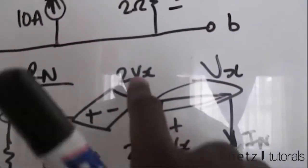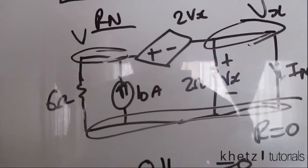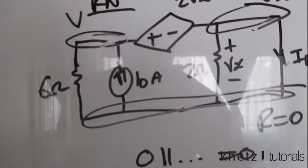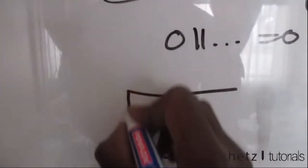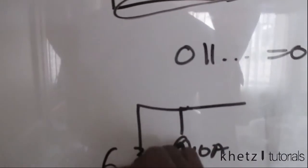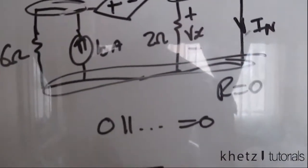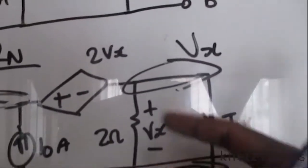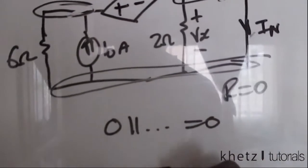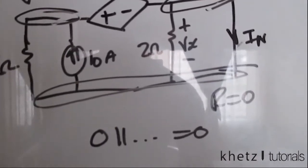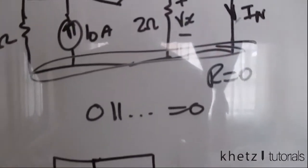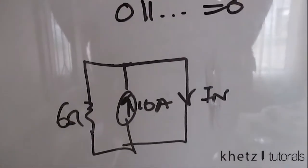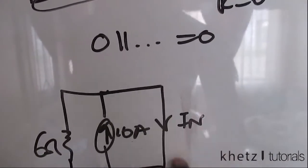Wherever we have Vx, we're going to put a zero. That is zero, that is zero, which means we're going to have a new circuit which looks like this: we're going to have that 10 amperes, six ohms. Since this is zero, then it falls away into a short circuit, and this is zero as well, it falls away into a short circuit as well, then we have this In. As you can see, you have a short circuit again.